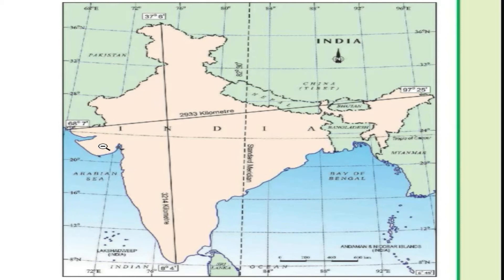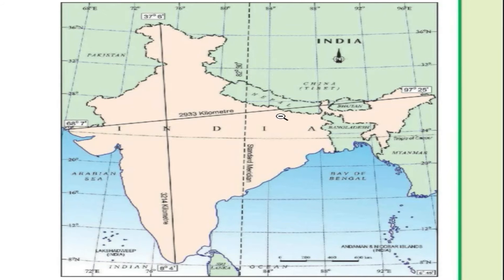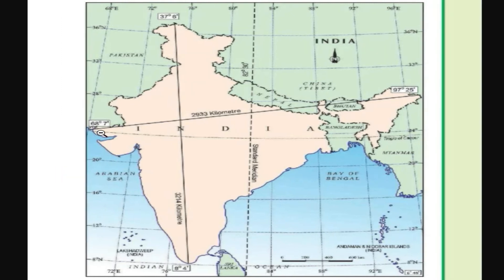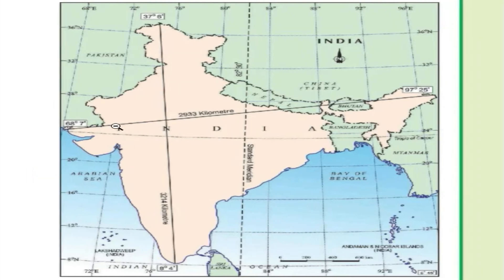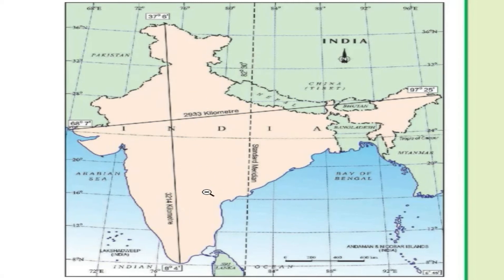India's longitude extends from 68 degrees 7 minutes East to 97 degrees 25 minutes East. The line known as the Tropic of Cancer divides India into two equal halves — the upper half is the sub-tropical part and the lower half is the tropical part.